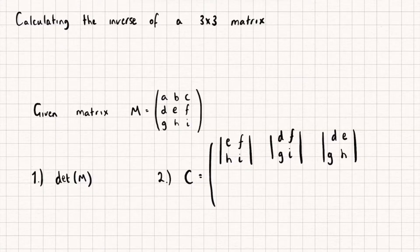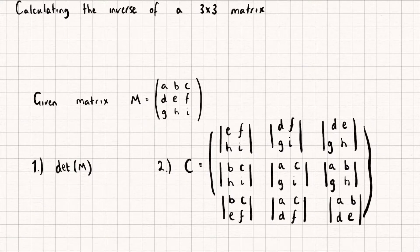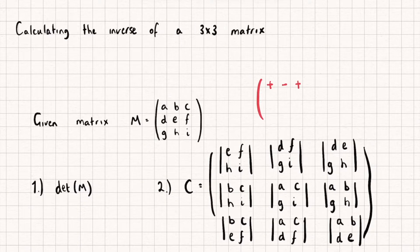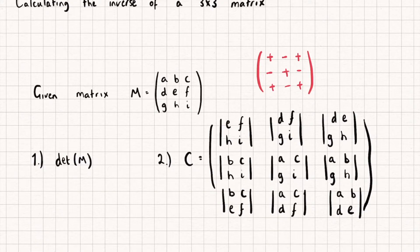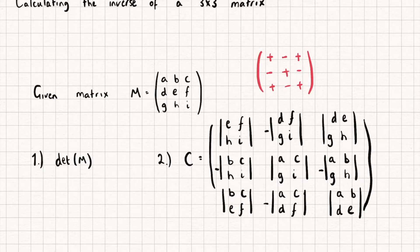These are called the cofactors for each element — this cofactor here is the cofactor for the element A, and so on. Now I've put in all of the cofactors for each element. The final thing we need to do to find the cofactor matrix is assign a positive or negative sign to each of these elements. We do this by using the 3x3 sign matrix — a 3x3 matrix with alternating pluses and minuses. We assign a plus or minus to each element in the cofactor matrix, so some will be negative. That gives us our cofactor matrix.